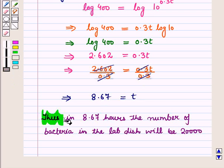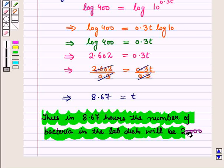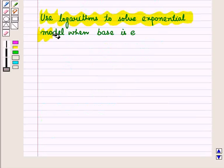Thus in 8.67 hours the number of bacteria in the lab dish will be 20,000. Now let us discuss how we can use logarithms to solve an exponential model when the base is E.